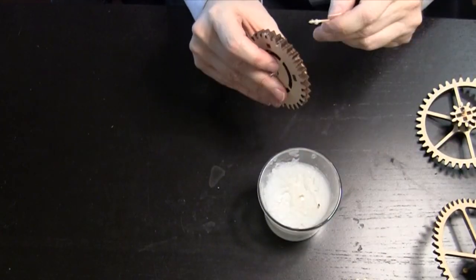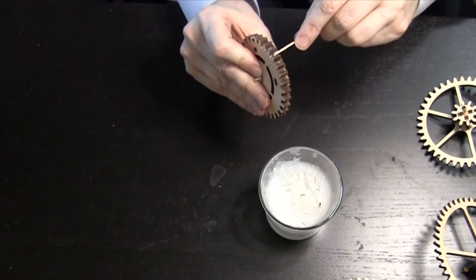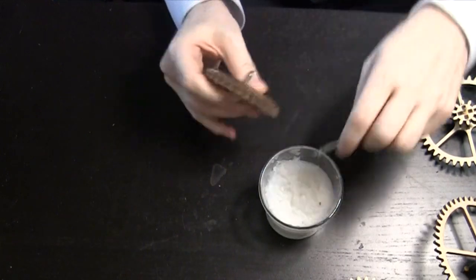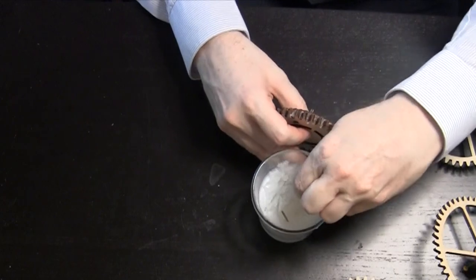I should note that you don't need to mark where you start. It's pretty clear which teeth have wax and which don't. Most of my effort is used in putting wax into the troughs. After that, I go through and spread the wax on the peaks of the gear.